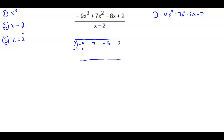We bring down the negative 9, and 2 times negative 9 gives us negative 18. Negative 18 plus 7 gives us negative 11. Negative 11 times 2 gives us negative 22. Negative 22 minus 8 gives us negative 30. 2 times negative 30 gives us negative 60, and negative 60 plus 2 gives us negative 58.